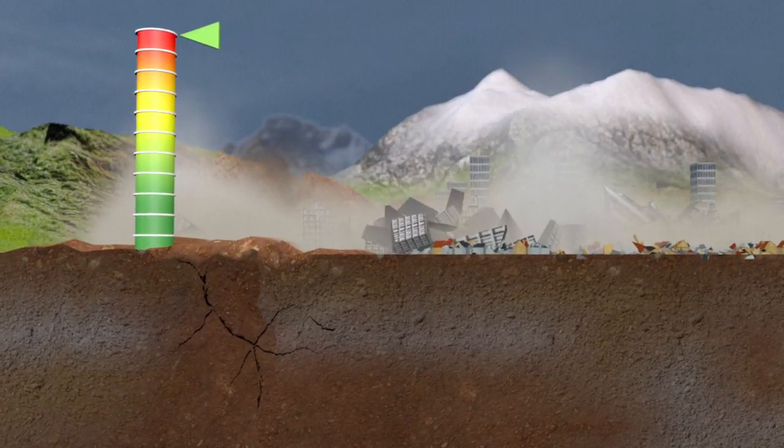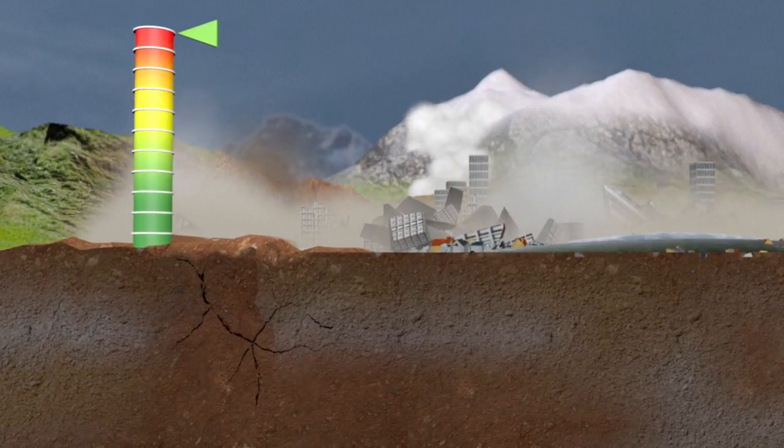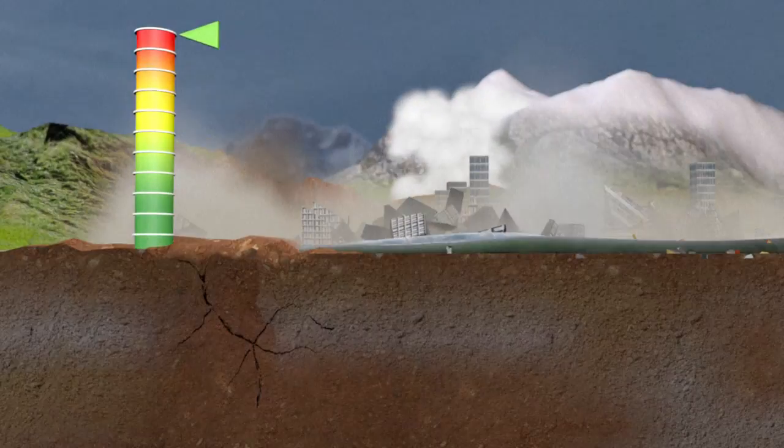When a big quake strikes, the scale acts as a warning against other natural phenomena which could be triggered, such as landslides, avalanches or tsunamis.